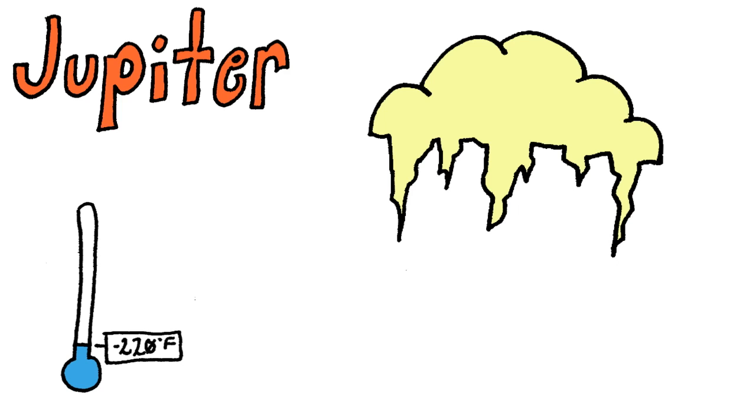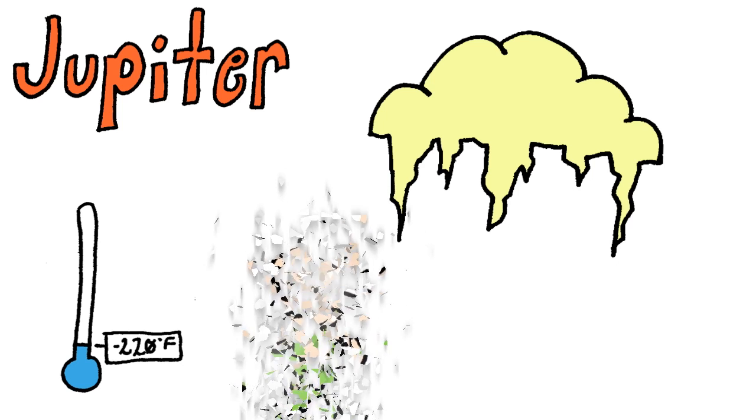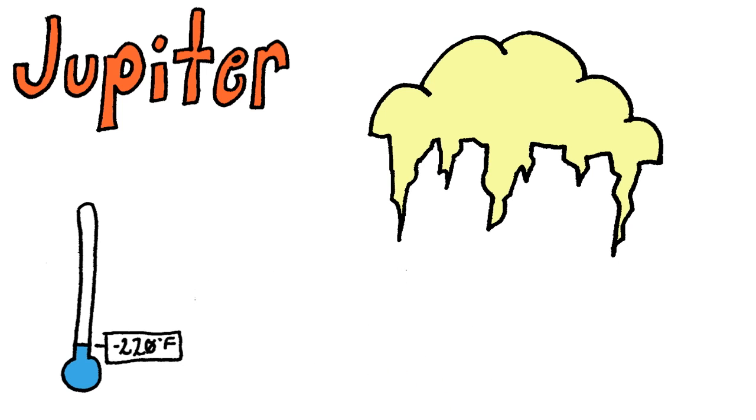Besides 300 mile an hour frozen ammonia storms, Jupiter has insane pressure within its atmosphere, which is literally enough to break bonds in the atoms of your body. Jupiter is not the greatest planet when it comes to planetary destinations.